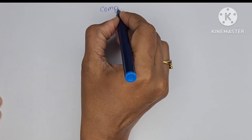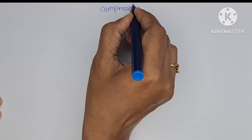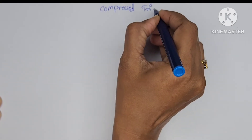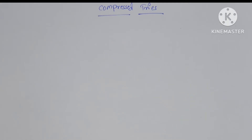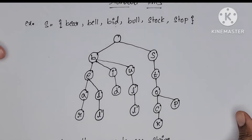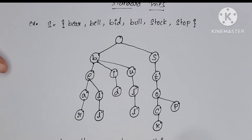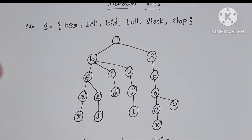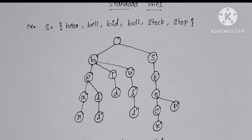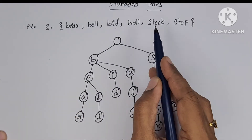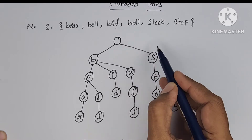In this video I am going to explain compressed tries. A trie is a tree data structure used to store and retrieve strings. In the previous video I explained about standard tries and how to construct them. The drawback of standard tries is that if the number of levels increases, then automatically search time also increases.